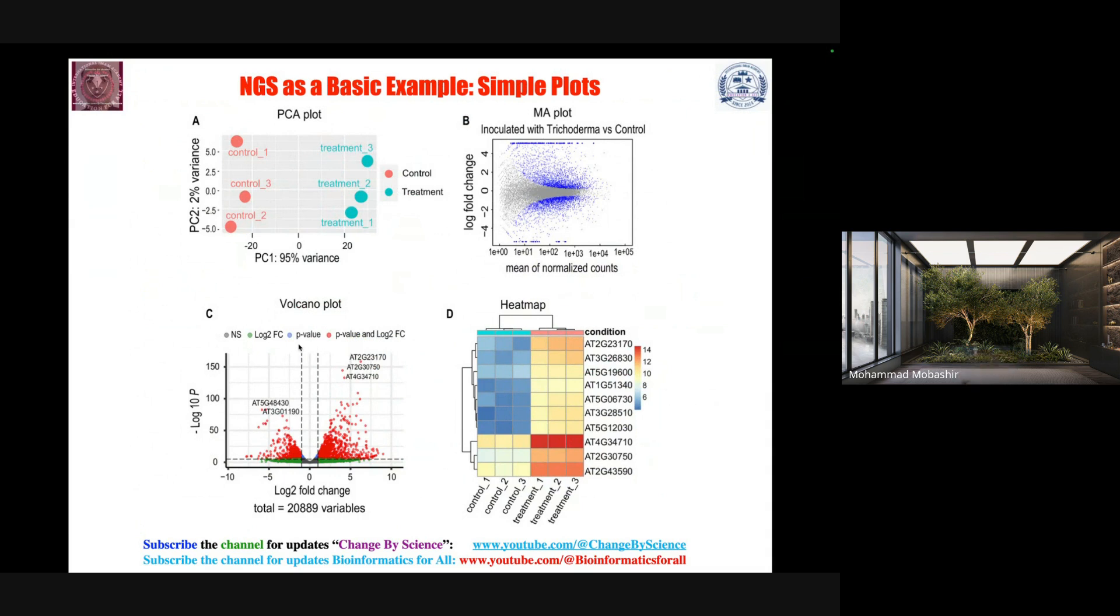The volcano plot can present log2 fold changes and p-values in parallel, so in one figure you can see both values. The MA plot shows log2 fold change and mean of normalized counts. The heat map represents the clustergram as well as gene expression values for different conditions: control and treatment.